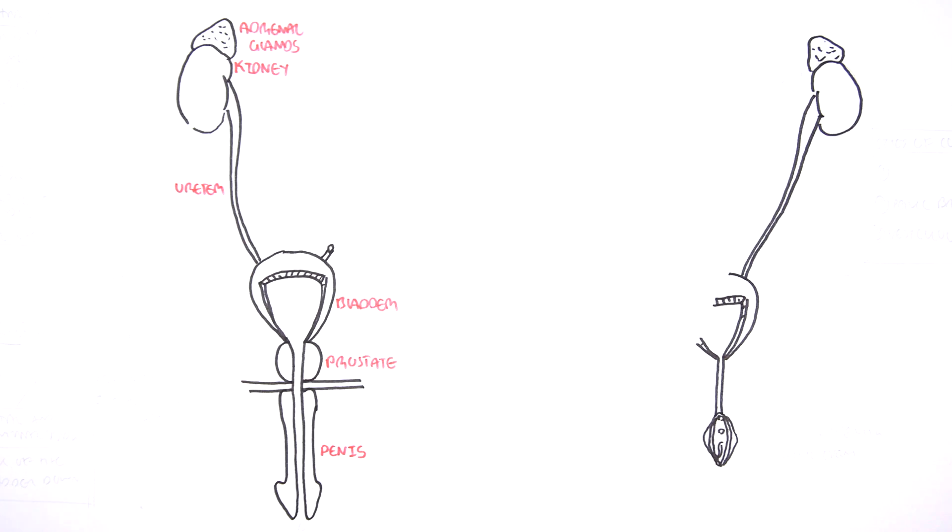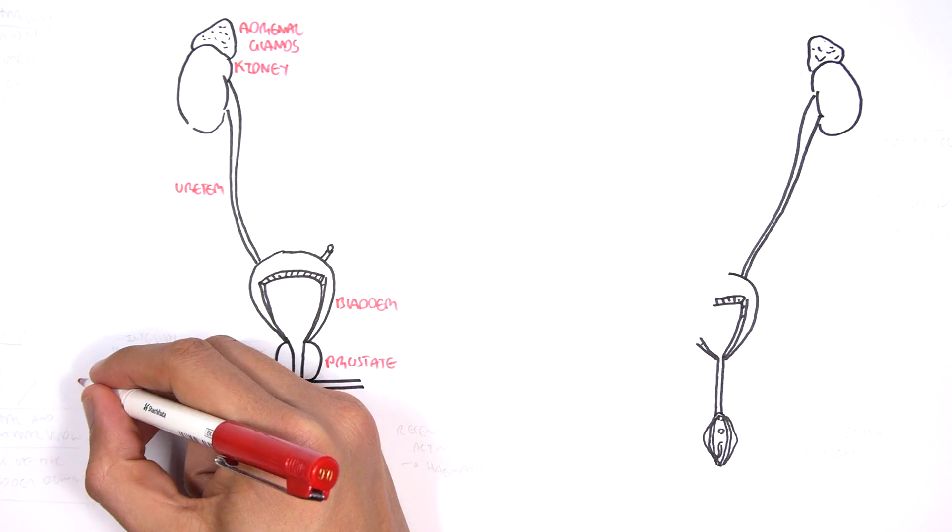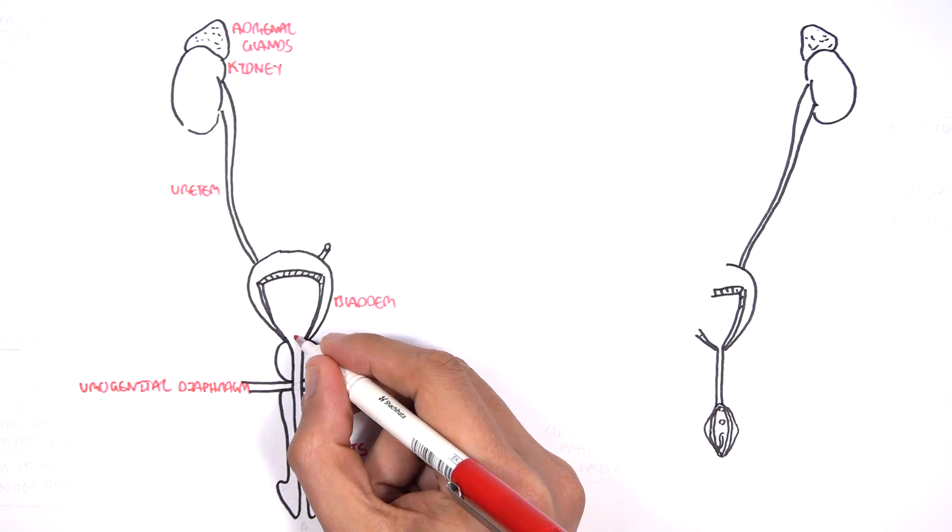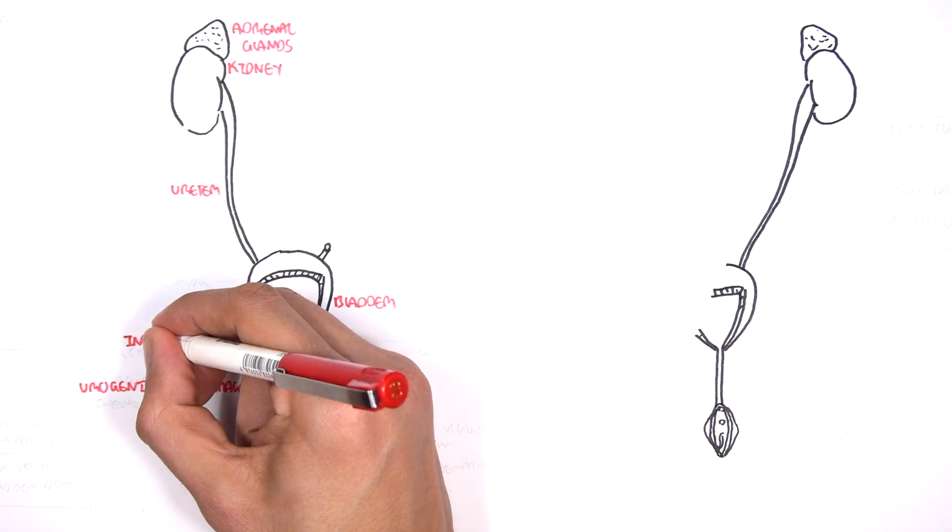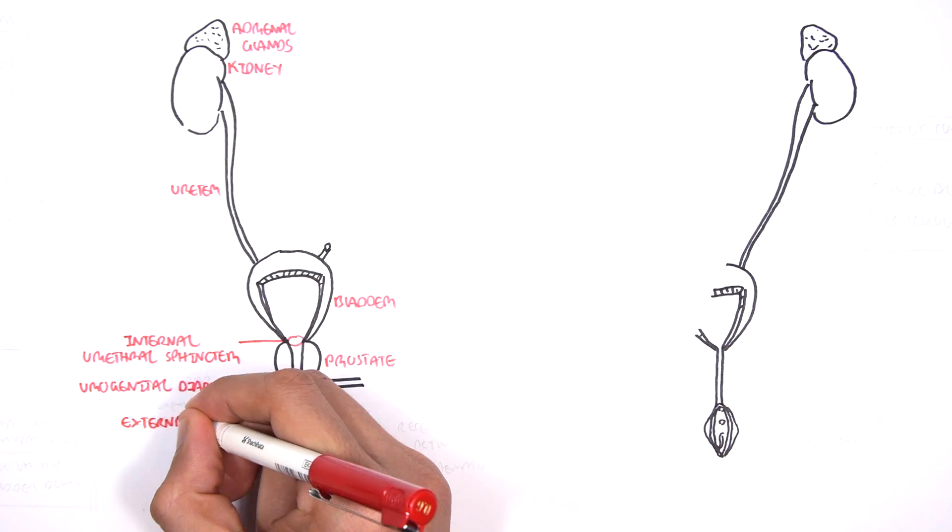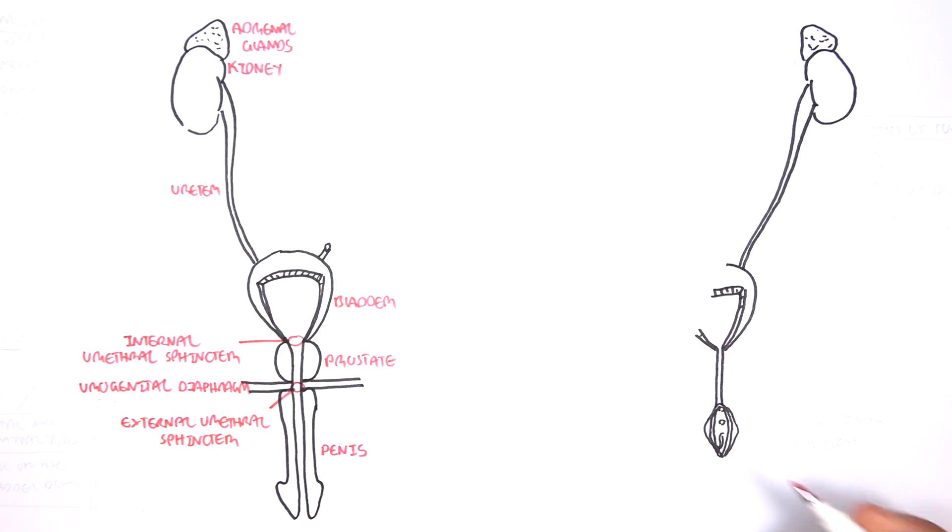The urogenital diaphragm here separates the prostate and the penis. Here is the internal urethral sphincter at the neck of the bladder, and then you have the external urethral sphincter along where the urogenital diaphragm is. The end of the penis is the external urethral meatus where urine comes from or sperm, depending on what you're doing.